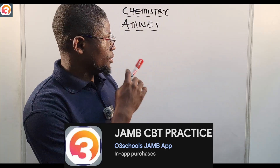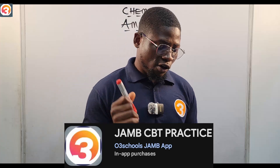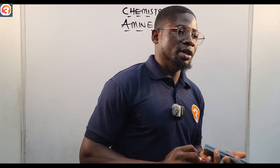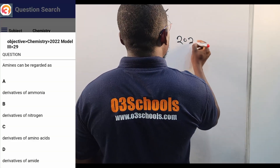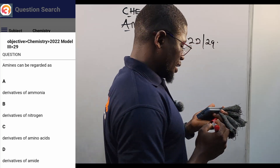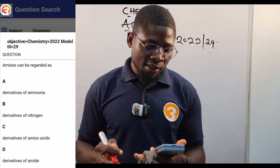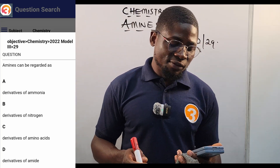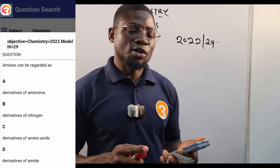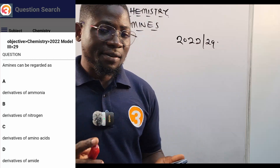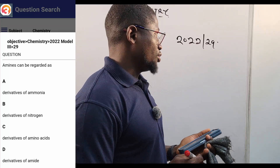This tutorial is brought to you by the Old School Jam CBT Practice App. Let us see a question that relates to amines from the app — a past question, 2022 number 29. It says: amines can be regarded as — A: derivatives of ammonia, B: derivatives of nitrogen, C: derivatives of amino acids, D: derivatives of amides.